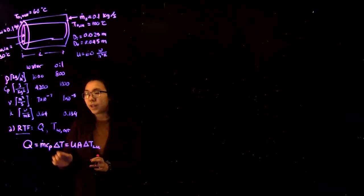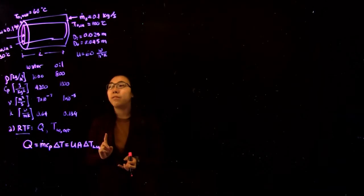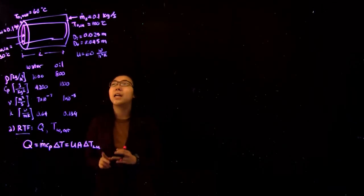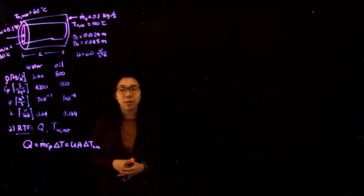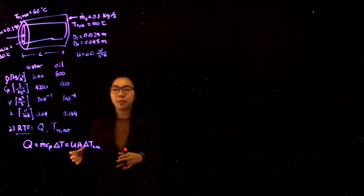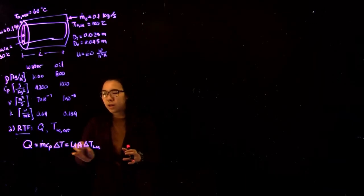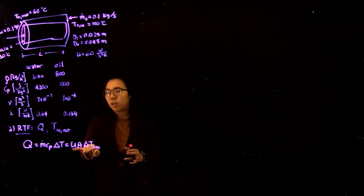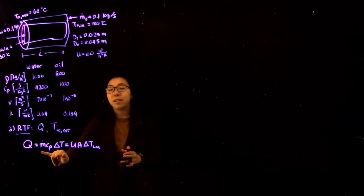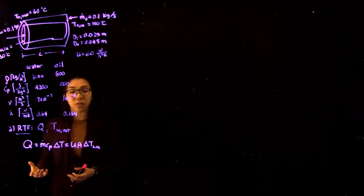So the first thing we want to do is find the value of Q. In this case, it's actually fairly straightforward because we have the heat capacity, the mass flow rate, and the inlet and outlet temperatures of the oil. If we didn't have that, then we would need to set up a different equality and basically equate UA delta T log mean to MCP delta T for either of the fluids. But in this case, we can actually solve for Q directly.